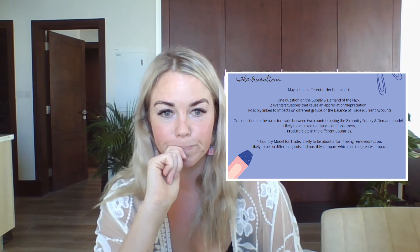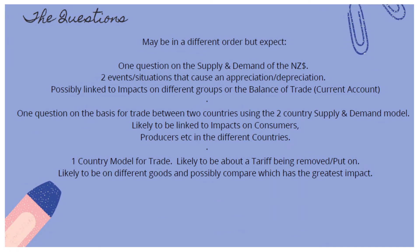There'll also be a question about the one-country model — looking at one country and putting a tariff on or off. Look at what a tariff is, how it changes the graph, how it affects the quantity demanded and quantity supplied. It will most likely involve different goods to compare which has the greatest impact — for example, rice versus wheat. Always come back to the end impact on trade.